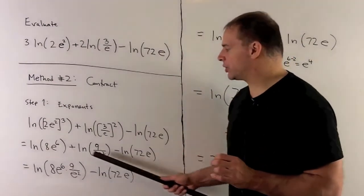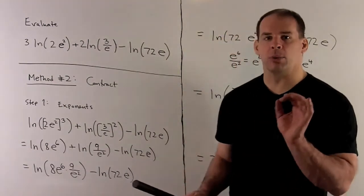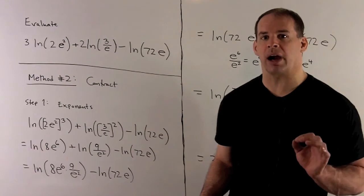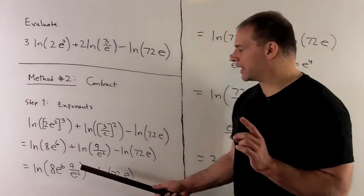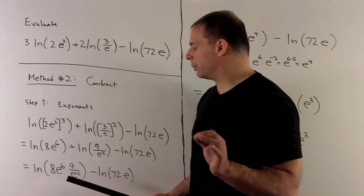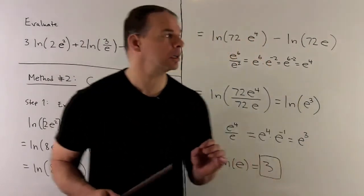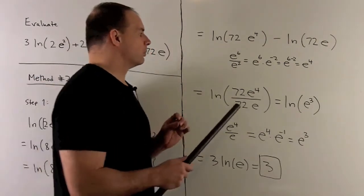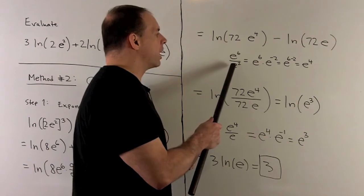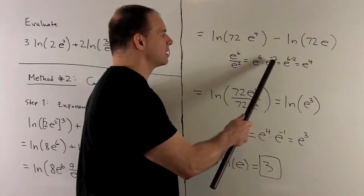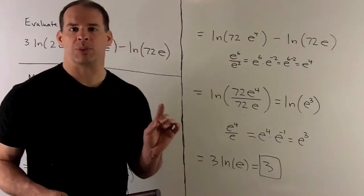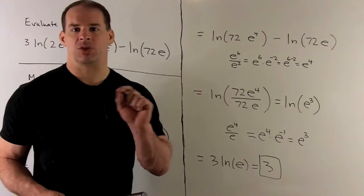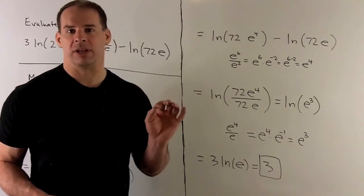For the first two terms, we take their sum and combine as a product inside: 8e to the 6th times 9 over e squared. Simplifying: 8 times 9 is 72, and e to the 6th over e squared is e to the 4th — either by treating e squared as e to the minus 2 and adding exponents to get 4, or by canceling directly. So we have natural log of 72e to the 4th.